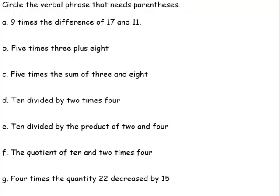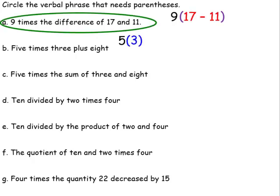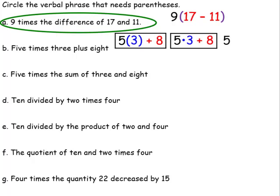Circle the verbal phrase that needs parentheses. We have 'nine times the difference' — we can't multiply nine times a minus sign, so we have to use parentheses. We're finding the difference of 17 and 11. For 'five times three plus eight,' you could write it as five times three plus eight without parentheses, so we're not going to circle that one.